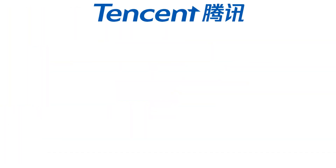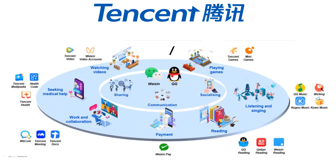Tencent is a software company from China. The best way to understand their business is to look at their ecosystem image, especially in the center where they have two apps: WeChat together with Weixin and the QQ app. Those are social media apps — a combination between WhatsApp and Facebook, where users can socialize and share images and videos with others.